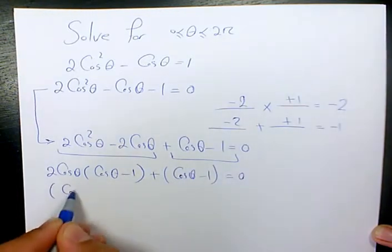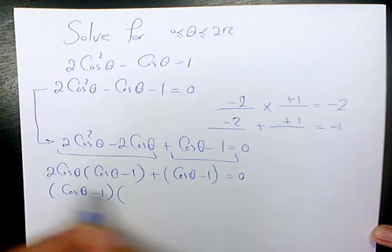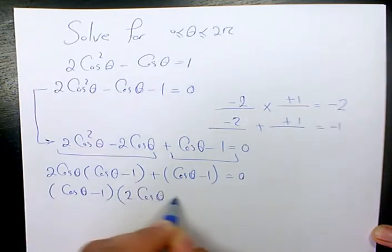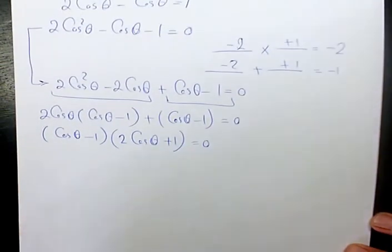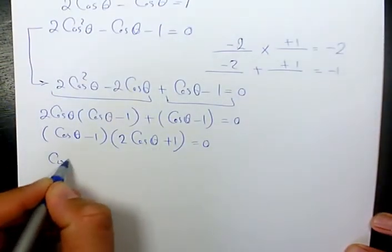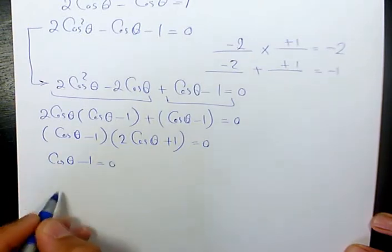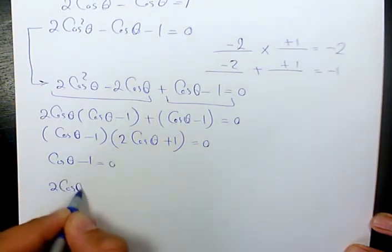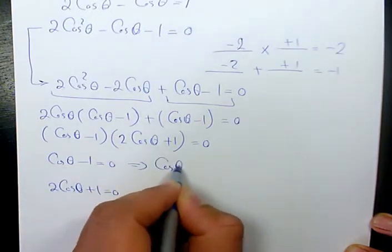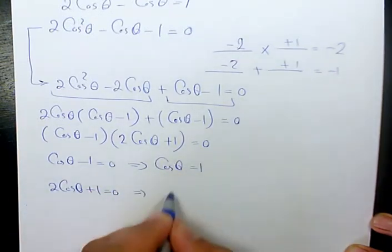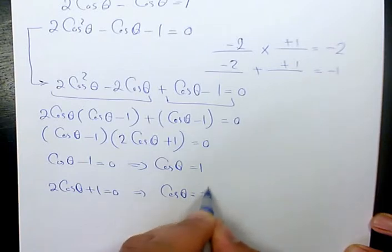Then I factor cosine theta minus 1. And here it will be 2 cosine theta plus 1 equals to 0. Now, I have two cases. One case is cosine theta minus 1 is 0. The other one is 2 cosine theta plus 1 is 0. So, we have two answers. Cosine theta equals to 1. And cosine theta equals to negative half.